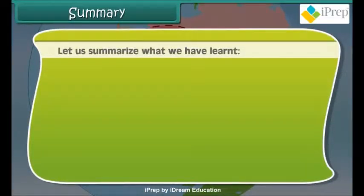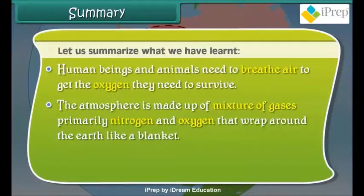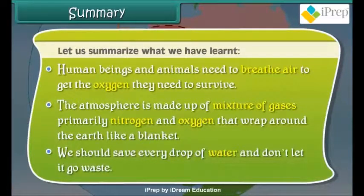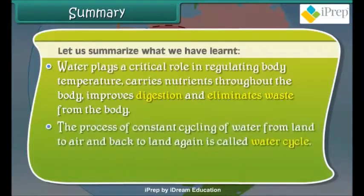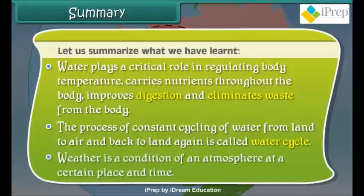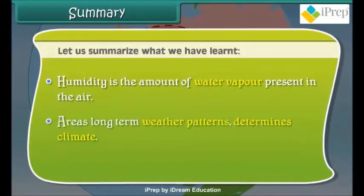Let us summarize what we have learnt. Human beings and animals need to breathe air to get the oxygen they need to survive. The atmosphere is made up of a mixture of gases, primarily nitrogen and oxygen, that wrap around the earth like a blanket. We should save every drop of water. Water plays a critical role in regulating body temperature, carries nutrients throughout the body, improves digestion and eliminates waste. The process of constant cycling of water from land to air and back is called the water cycle. Weather is a condition of an atmosphere at a certain place and time. Humidity is the amount of water vapor present in the air. An area's long-term weather patterns determine its climate.